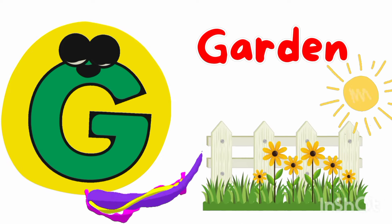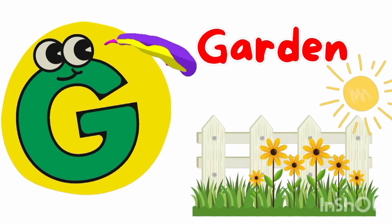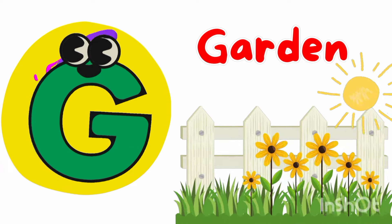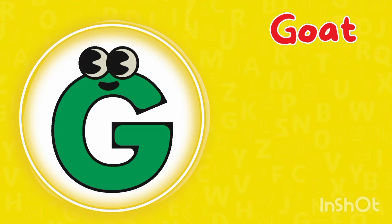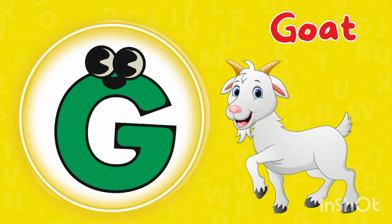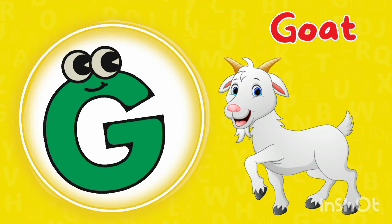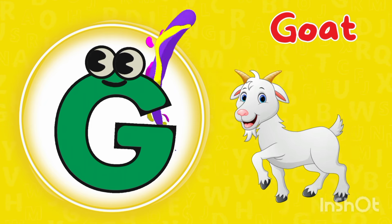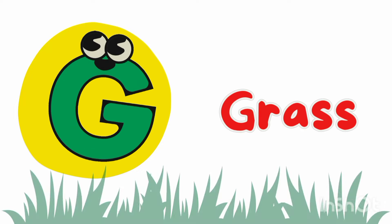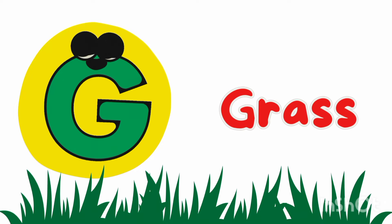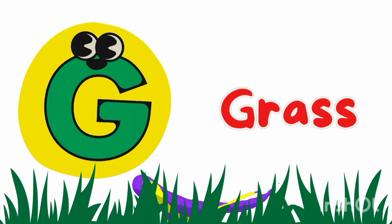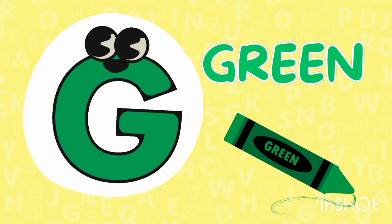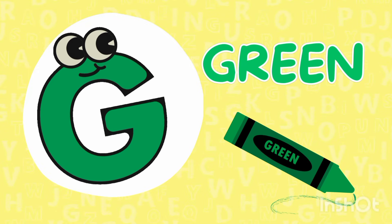G is for garden, g-g-garden. G is for grass, g-g-grass. G is for green, g-g-green.